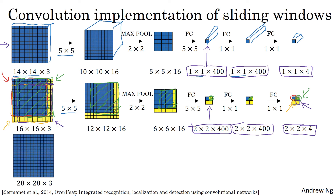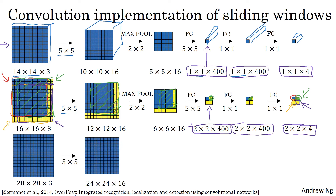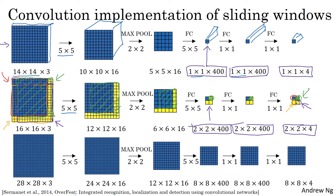For a bigger example, if you run sliding windows on a 28 by 28 by 3 image using the same forward propagation, you end up with an 8 by 8 by 4 output. This corresponds to running the sliding windows with the 14 by 14 region across all positions with a stride of two — eight positions across and eight positions down — giving all 8 by 8 by 4 outputs. The stride of two arises because of the 2 by 2 max pooling applied to the original image.